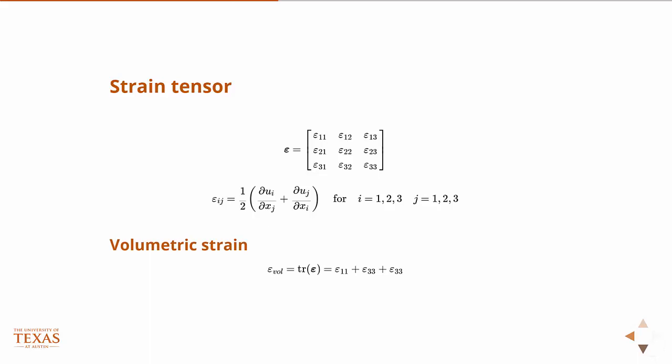Also just want to note that the volumetric strain, which is a scalar, is the trace of the strain tensor. So when we talked about linear algebra, I don't think we talked about trace. But the trace of any matrix is the sum of the diagonals. And we'll use this notation sometimes. And we call that the volumetric strain.